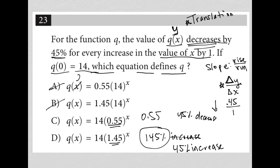Because again, if you decrease by 45%, you're left with 55%. So I'm liking choice C as the best answer to this question.